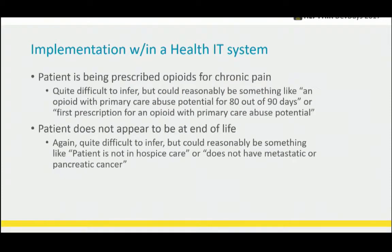How do you actually implement that within a health IT system? Determining that a patient is being prescribed opioids for chronic pain is quite difficult to infer. One reasonable approach would be primary care abuse potential for 80 out of 90 days, or the first prescription for an opioid with primary care abuse potential. Patient does not appear to be at end of life is also difficult to determine, especially at point of care. A reasonable approach: patient is not in hospice, or does not have metastatic or pancreatic cancer. Those are the gates to get into this recommendation.